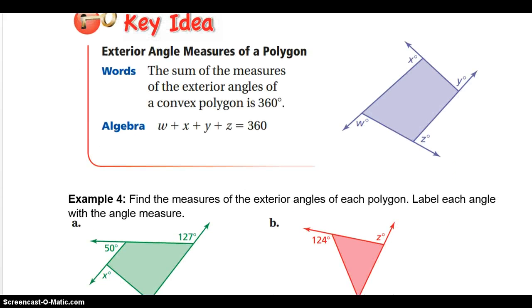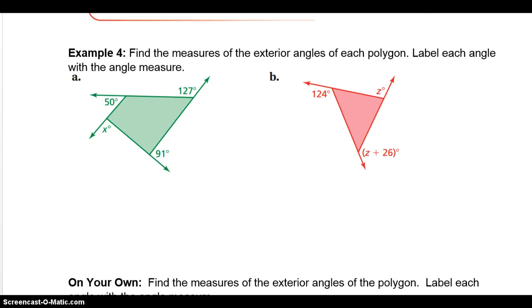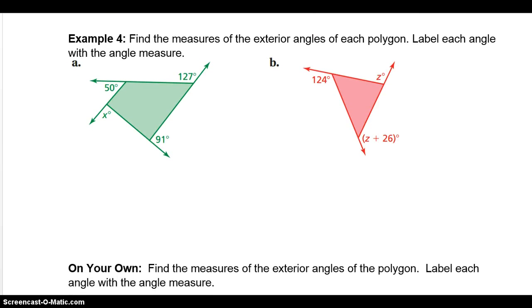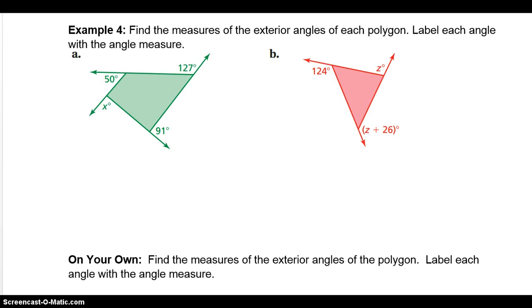Key idea, the exterior angle measures of a polygon, the sum of the measures of the exterior angles of a convex polygon is 360 degrees. So all of the outside angles here on a polygon will add up to 360. So let's try an example. We talked about this some in class today also. Find the measures of the exterior angles of each polygon. Label each angle with the angle measure. So here we go. We have 50 plus 127 plus 91 plus this x should equal 360.